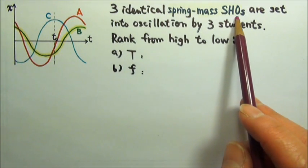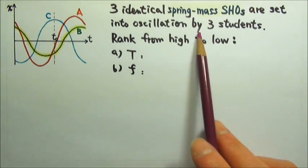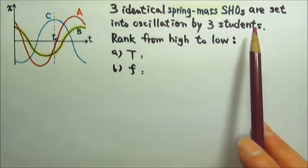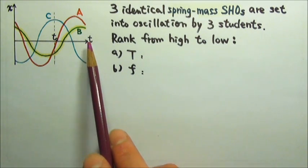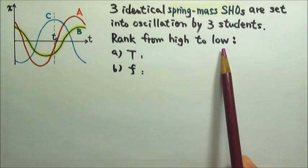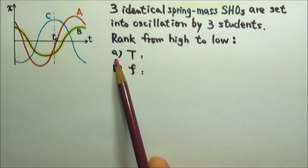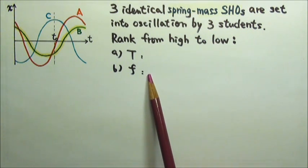Three identical spring-mass simple harmonic oscillators A, B, and C are set into oscillation by three students. This position as a function of time graph shows the motion of the three oscillators. Rank the three oscillators from high to low according to A, the period of the oscillation, and B, the frequency of the oscillation.